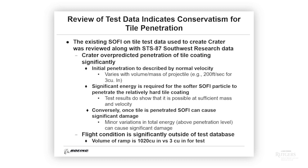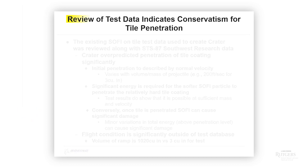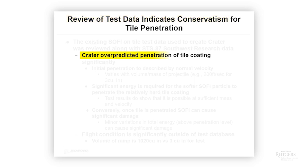Instinctively, we perceive bullet points as lists, which imply top-to-bottom hierarchy. So when the title at the top mentions conservatism with respect to concerns, and the third sentence states that the chances of penetration by debris were over-predicted, NASA officials were convinced that the report indicated there was no problem — instead of significant uncertainty — and decided that the shuttle Columbia was safe for atmospheric re-entry.